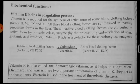Hence, Vitamin K is also called the anti-hemorrhagic vitamin because it stops bleeding or loss of blood as it helps in the coagulation process. Certain drugs like dicumarol and warfarin are two important anti-vitamins which act against Vitamin K and act as anticoagulants. Warfarin is used in the treatment of thrombotic diseases. So, Vitamin K is a coagulation-involved vitamin, whereas anticoagulants prevent coagulation. This concludes the discussion on Vitamin E and K. Thank you.